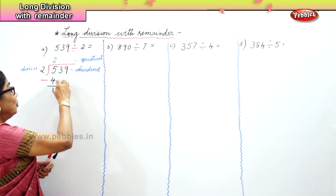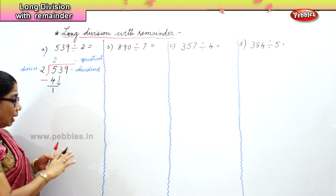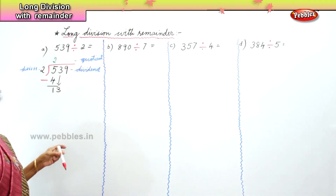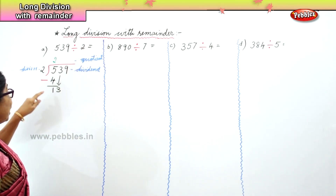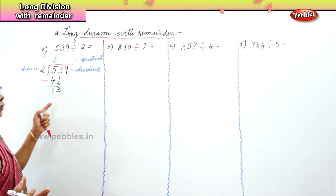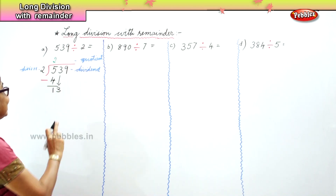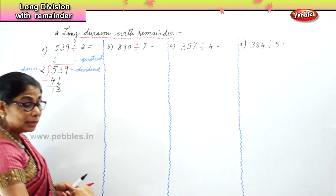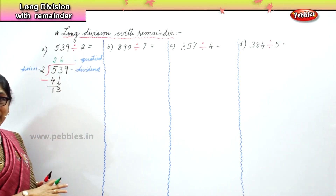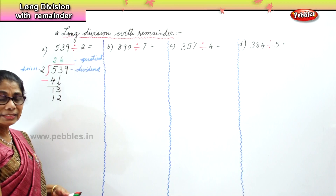Five take away 4 is 1. Now bring the 3 down. With the 1 already there we get 13. We look at how many times 2 goes into 13 — six 2s are 12.